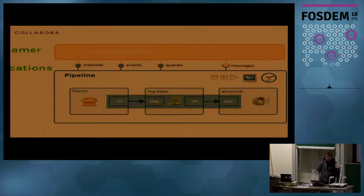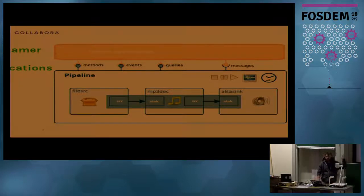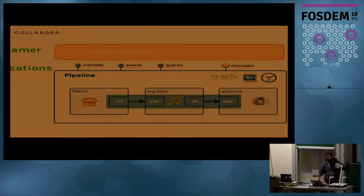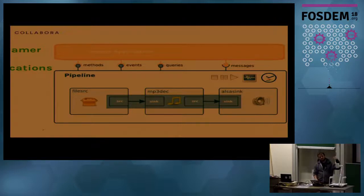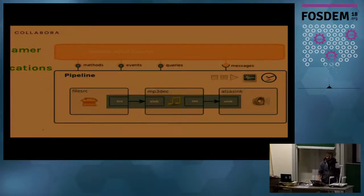In applications, GStreamer has basically only four types of entry points. There are methods, events, and queries which go from the application to the framework. Events are fire-and-forget — you may get a reply from somewhere else, or maybe not. Queries are blocking and you wait for a reply. Messages come from the framework to the application — they can be spontaneous because they tell you about some unpredictable event, or they can happen as a reply to an action you've taken, for example an async-done message after an asynchronous state change.